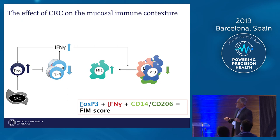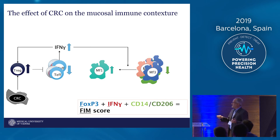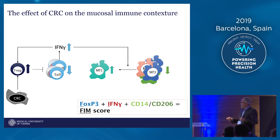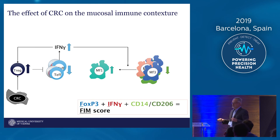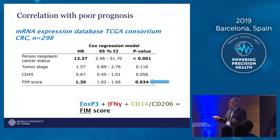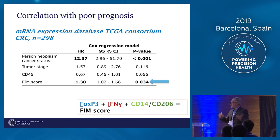To summarize: colorectal cancer increases the number of regulatory T cells and reduces the number of T-effector cells, but those cells which survive this reduction produce more interferon gamma. The interferon gamma is modulating the macrophages towards a more inflammatory phenotype. To verify this beyond our 20 patients, we defined a so-called FIM score, which includes FOXP3, interferon gamma, and the CD14/CD206 ratio, and looked at it in the TCGA database to compare the expression of these tissue biomarkers to patient prognosis. We found a hazard ratio of 1.3, statistically significant — meaning the more we have a change towards this FIM score, the worse the prognosis of the patient.